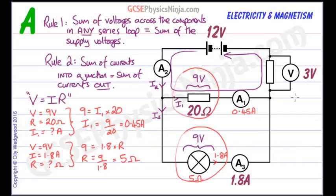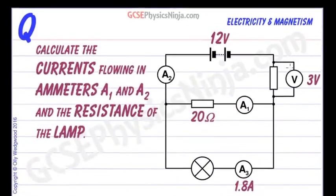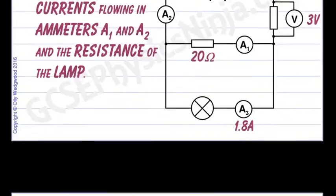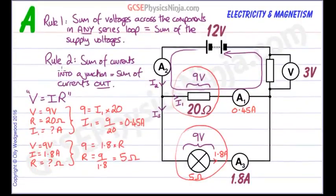We still have one part to answer though. We've answered ammeter A1 value and we've answered the resistance of the bulb. We've still got to find the current flowing through A2. And this is where we can use rule 2.